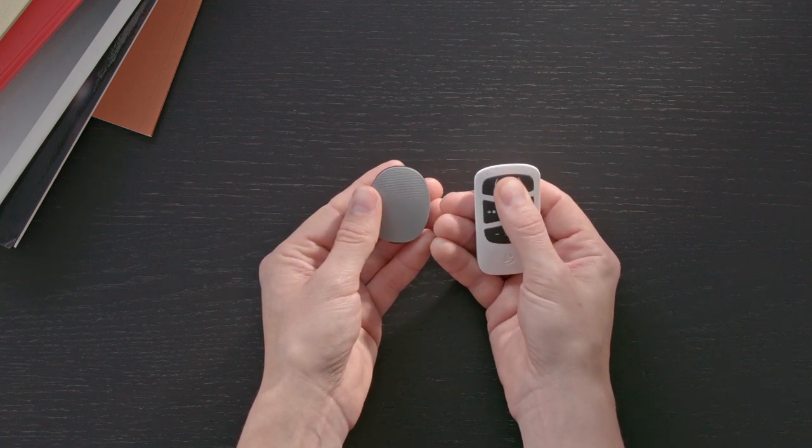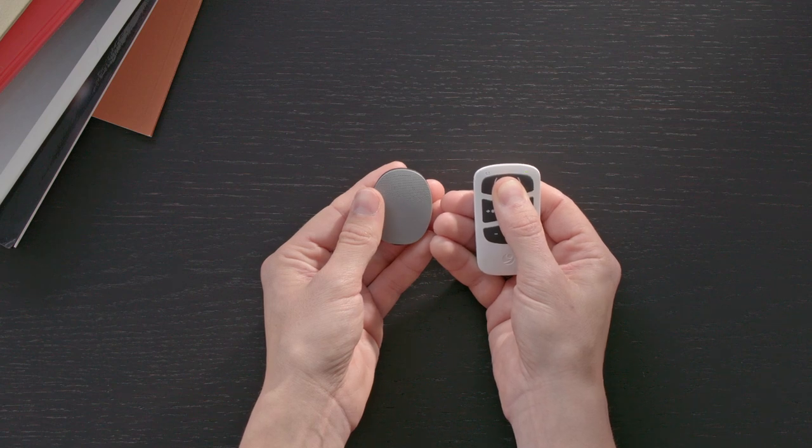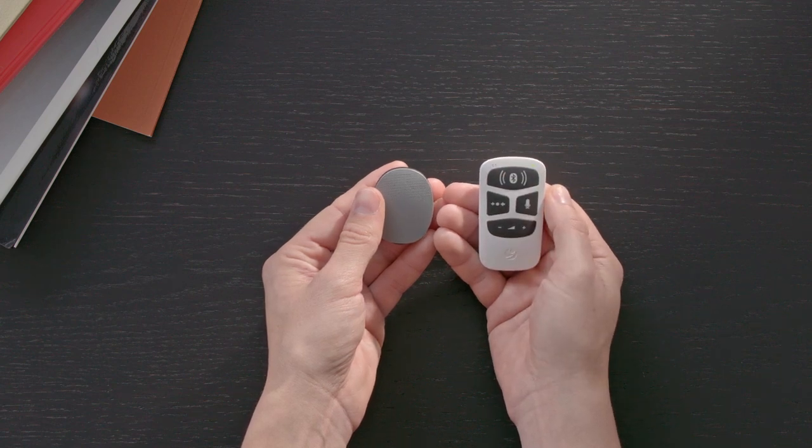First, switch on AudioLink by pressing the main button for two seconds. The light will indicate it is on.